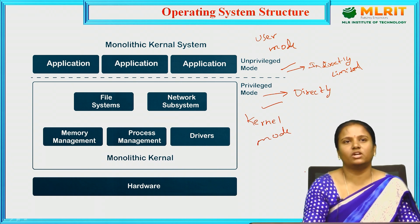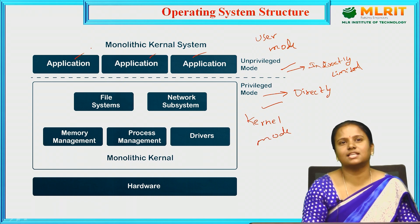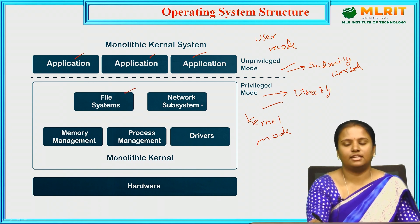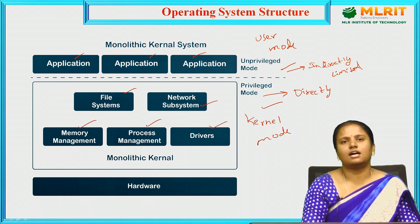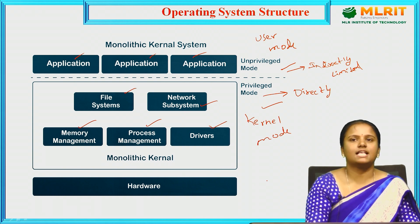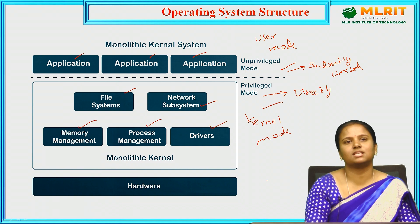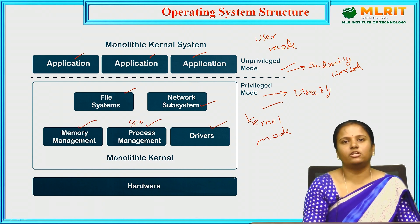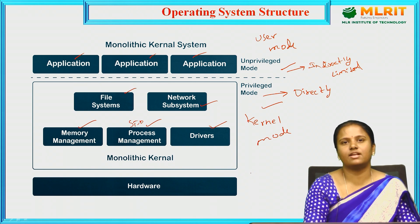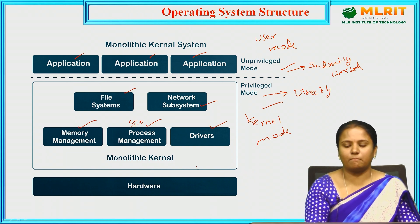In unprivileged mode, the user can access applications indirectly within a limited time span. In privileged mode, we have file systems, network subsystem, memory management, process management, and drivers. File systems store files and folders; network subsystem handles sending and receiving messages between client and server; memory management covers RAM and ROM; process management handles storage device management; and drivers include device drivers like printer drivers and BIOS drivers.